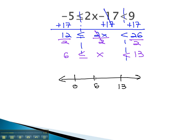Because it's or equal to 6, we will have a closed dot at 6, and an open dot at 13, and we want to be between those two values.